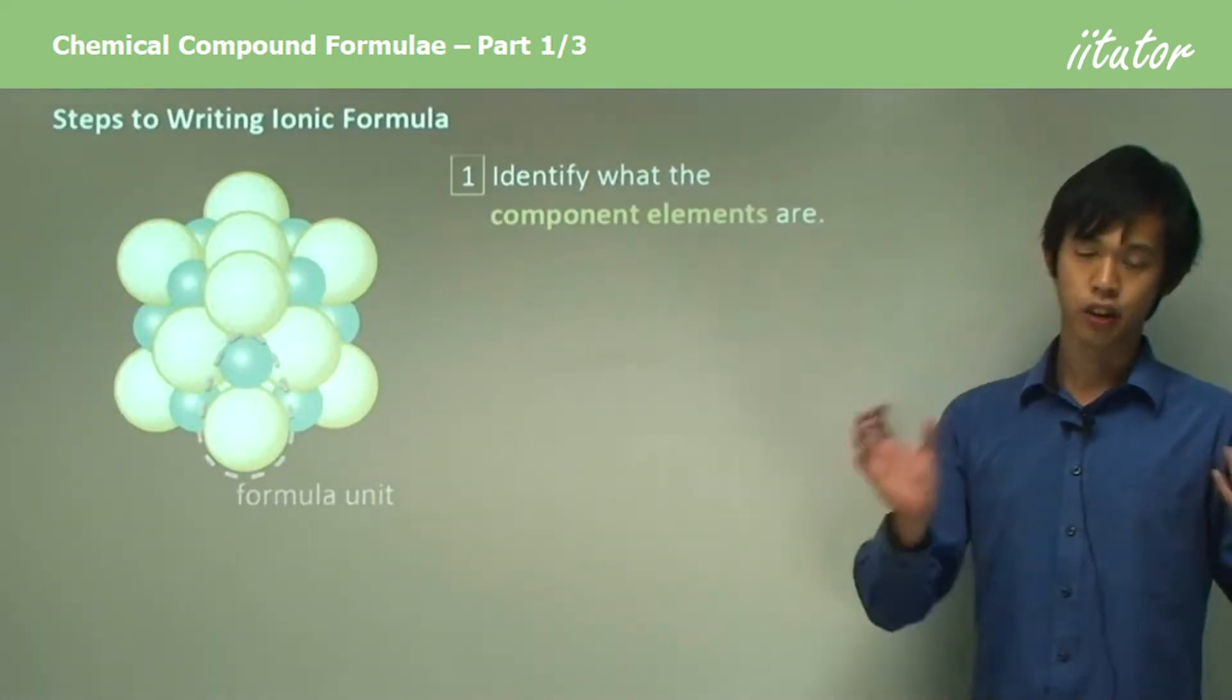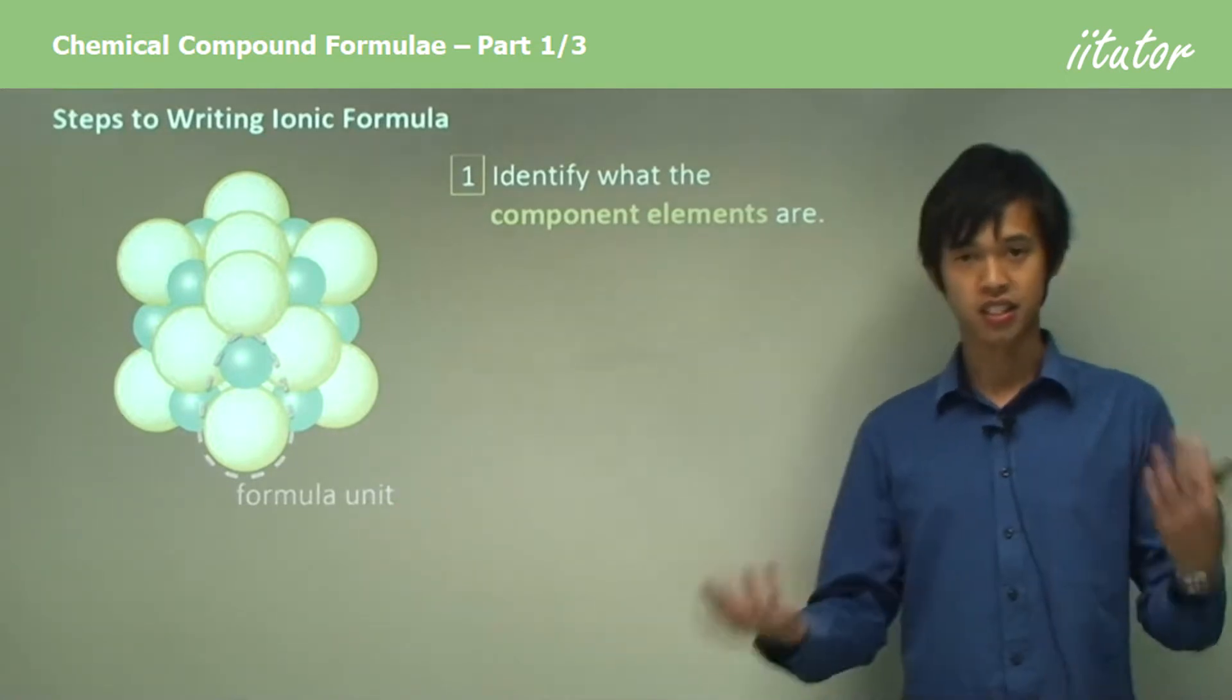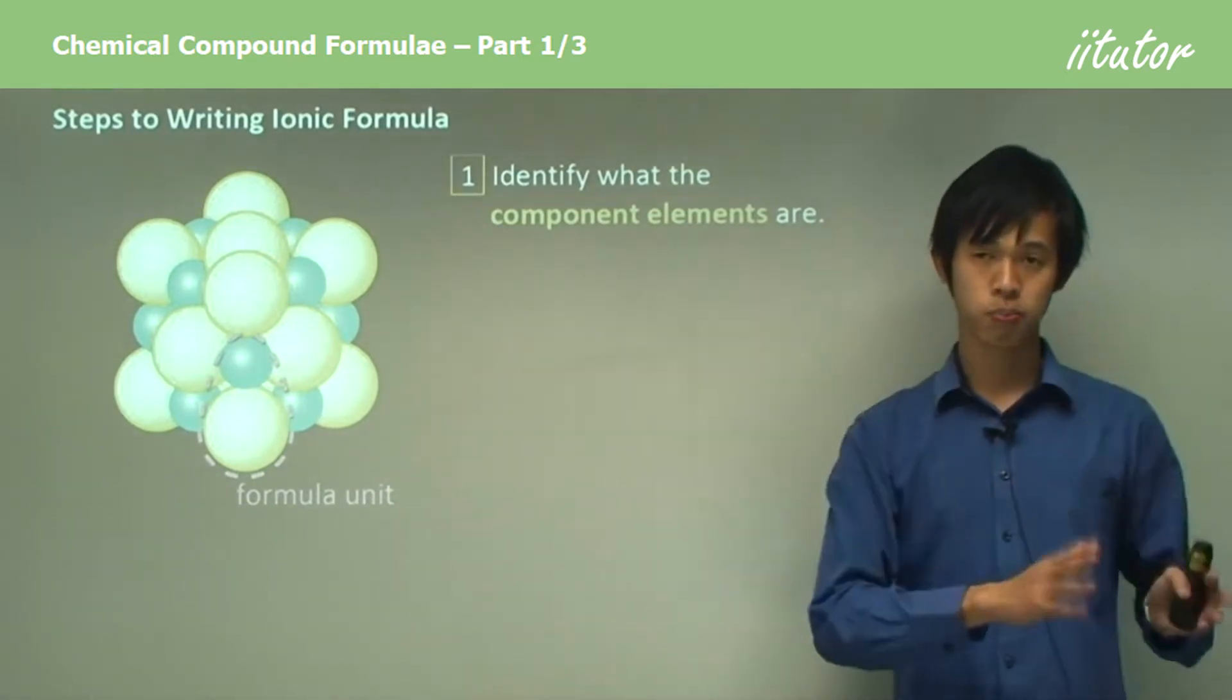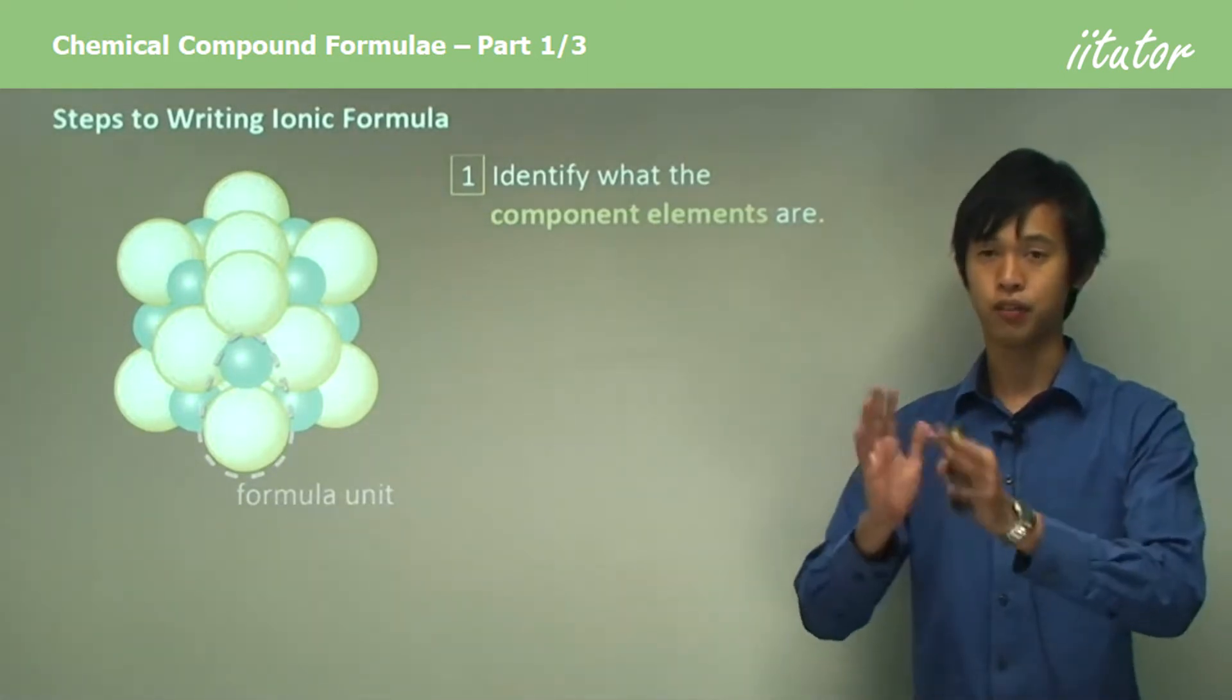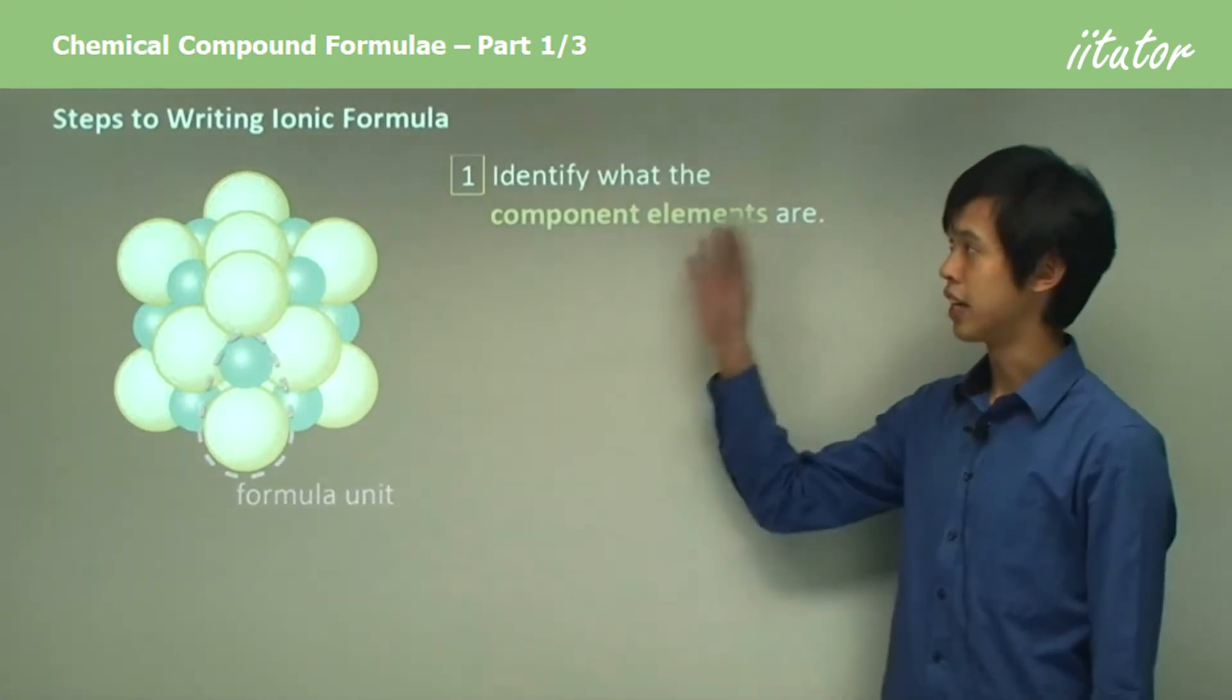Remembering that we have ionic, covalent, metallic structures and all these other things, we're going to just focus on each section in order to better understand how to write chemical formula for one section. We're going to look at how to write an ionic formula first and then we'll look at covalent ones later.